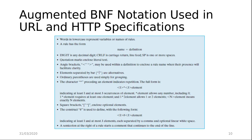The augmented BNF notation used in the URL and HTTP specification defines rules in lowercase. A rule has the form: name equals definition, and a digit is any decimal digit. Square brackets include optional elements. A hash construct is used to define list forms. A semicolon to the right of a rule starts a comment that continues to the end of the line.